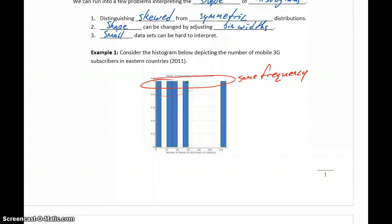So it can be difficult to distinguish skewed from symmetric distributions. We can adjust shape by changing bin widths, and in examples like this, when we have a relatively small number of data values to consider, looking at a histogram may not really give us the information we want or easily give us that information to help us understand the shape of the distribution.